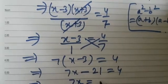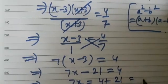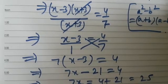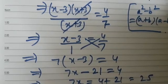This implies 7x is equal to 4 plus 21, that is 25. So we get x equals 25 upon 7.